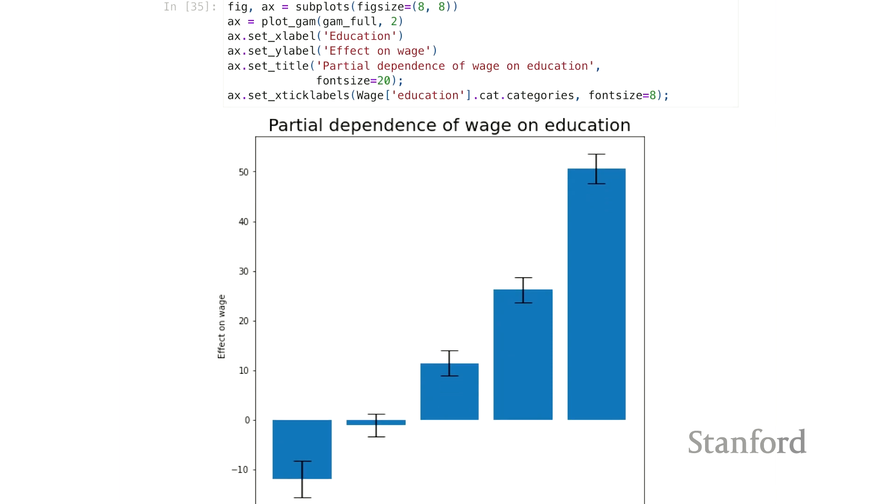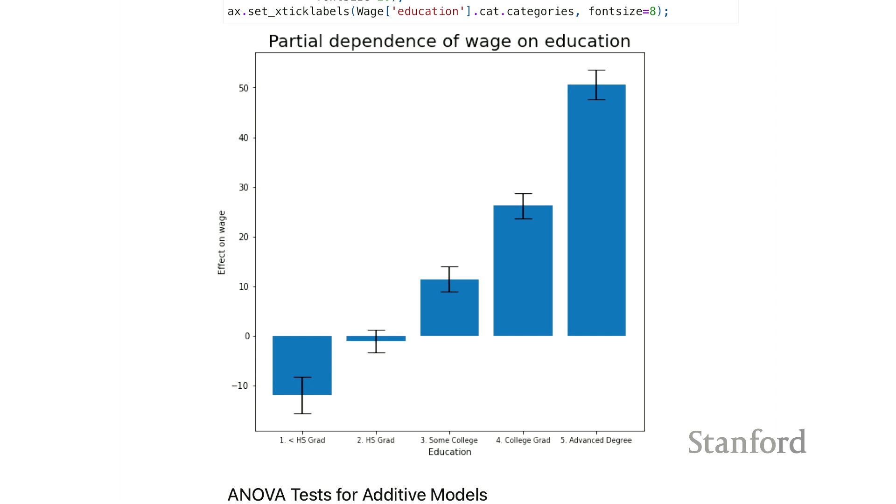So here's a plot. This is what a partial dependence plot for a categorical variable would look like. It would be a coefficient for each category.